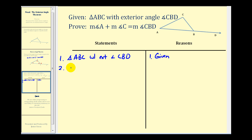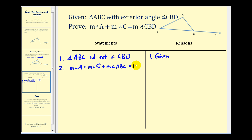We have the measure of angle A plus the measure of angle C plus the measure of angle ABC equals 180 degrees. Again, this is by the triangle sum theorem.